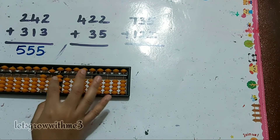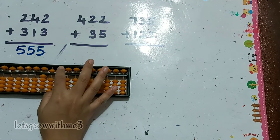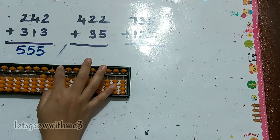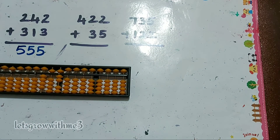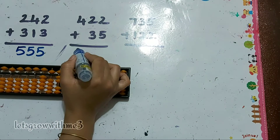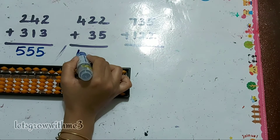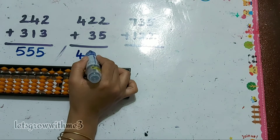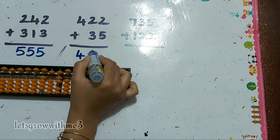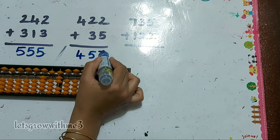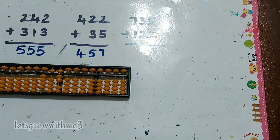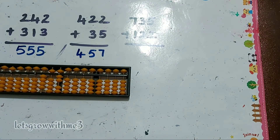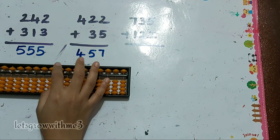Next one: 422 plus 35. How to add plus 3 — plus 5 minus 2. How to add 5 — we can add directly. So our answer is 457, okay.